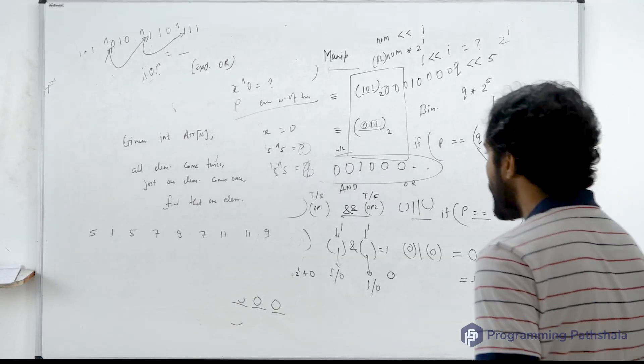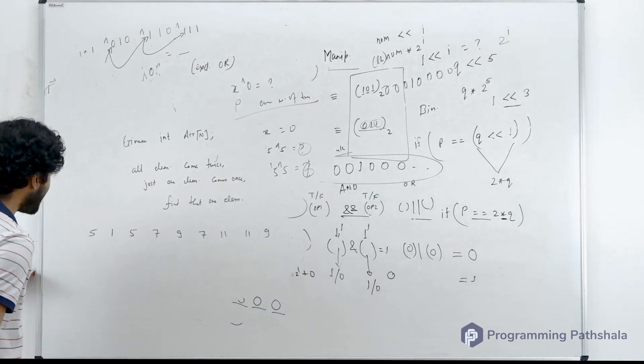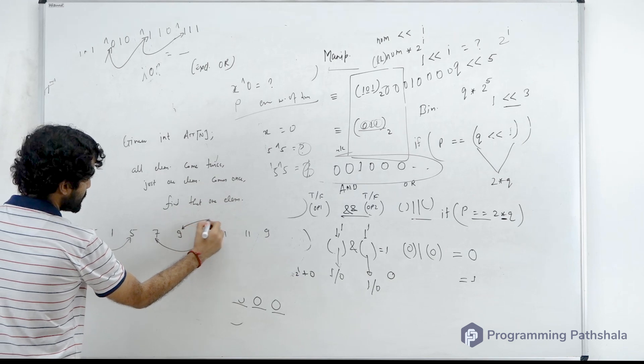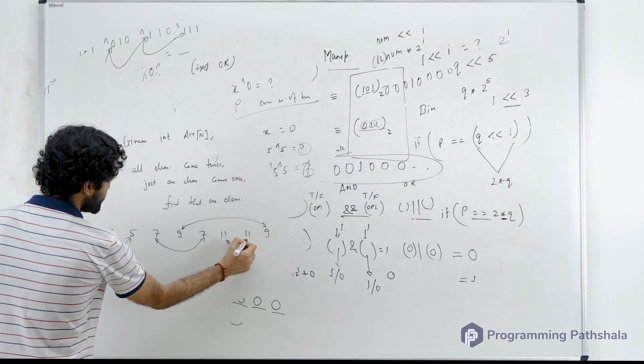So if you perform a XOR of the entire array, what is going to happen? The contribution of this will be 0, the contribution of this will be 0, contribution of this will be 0 and contribution of this will be 0.